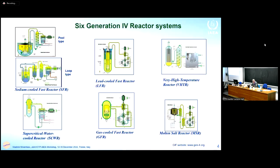The six Generation IV reactor systems include: sodium-cooled fast reactors (both pool and loop types), lead-cooled fast reactors, very high temperature reactors, supercritical water-cooled reactors, gas-cooled fast reactors, and molten salt reactors. Of these six, only the very high temperature reactor cannot work in the fast neutron spectrum, while all others — including molten salt — can work in both thermal and fast spectrum. Most Generation IV systems are therefore fast reactors.